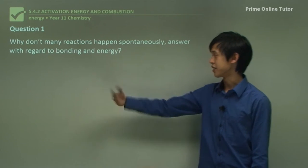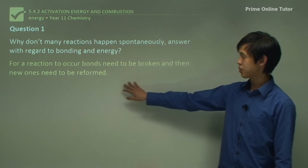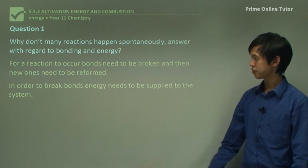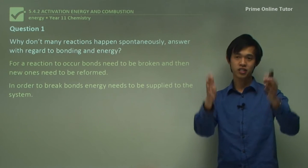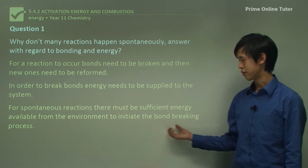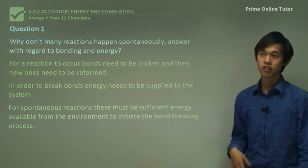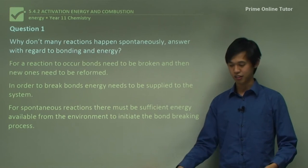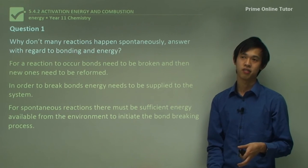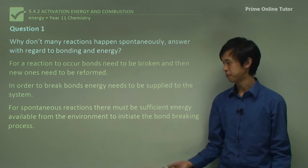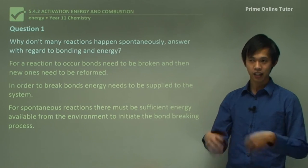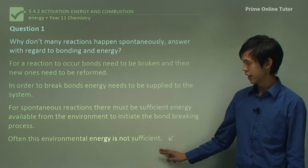Question one: why don't many reactions happen spontaneously? Answer with regard to bonding and energy. Well, for a reaction to occur, bonds need to be broken and then new ones need to be formed. In order to break bonds, energy needs to be supplied to the system. For spontaneous reactions, there must be sufficient energy available from the environment to initiate the bond-breaking process. If you want a spontaneous reaction to occur — something to just happen if you left it there — you have to have enough energy in the ambient environment to make that reaction happen, and often that's not the case.